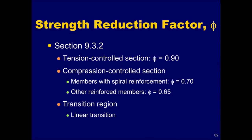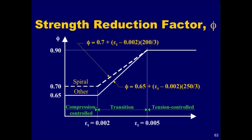For sections in the transition region between tension-controlled and compression-controlled sections, the phi factor may be linearly increased from that for compression-controlled sections to 0.9 as epsilon T increases from the compression-controlled strain limit to 0.005. The variation of phi with the net tensile strain, epsilon sub T, for grade 60 reinforcement is shown in this graph.